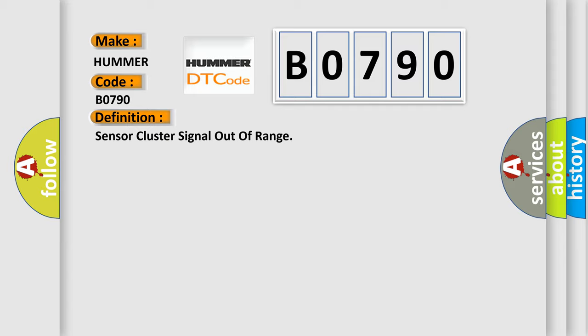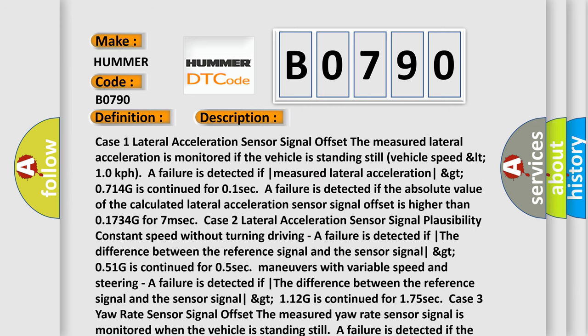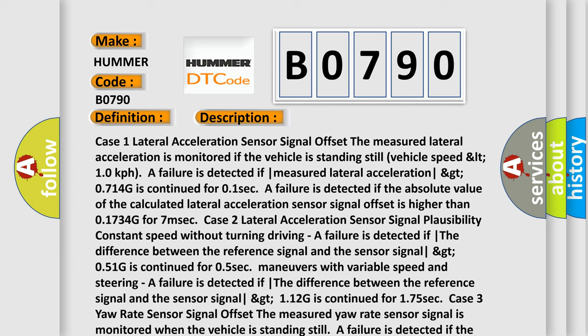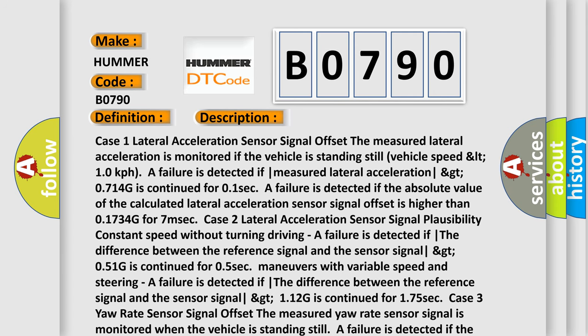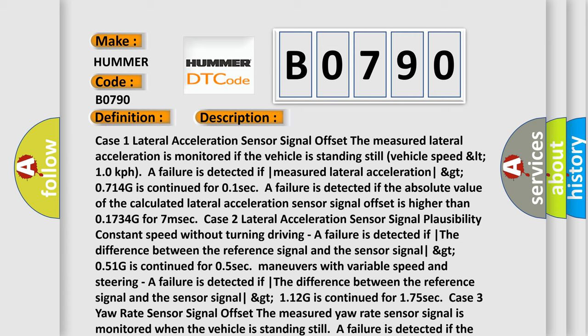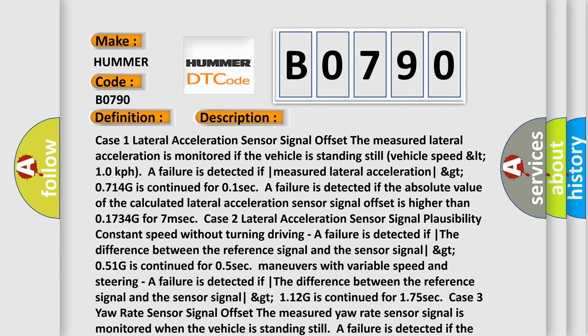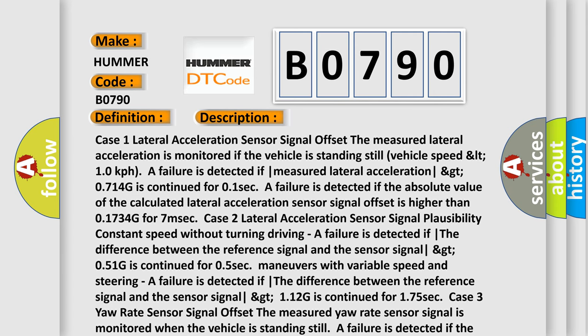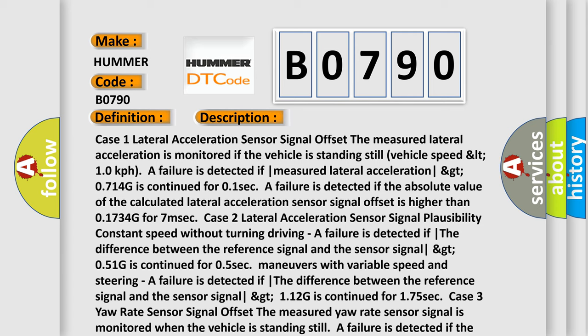And now this is a short description of this DTC code. Case 1: Lateral Acceleration Sensor Signal Offset. The measured lateral acceleration is monitored if the vehicle is standing still, vehicle speed less than 1.0 kph. A failure is detected if measured lateral acceleration greater than 0.714G is continued for 0.1 sec. A failure is detected if the absolute value of the calculated lateral acceleration sensor signal offset is higher than 0.1734G for seven milliseconds.